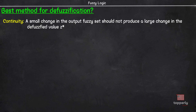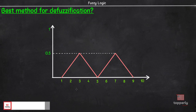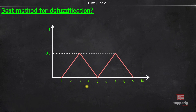The second criterion is known as disambiguity. This criterion says that there shouldn't be any ambiguity in the defuzzified value — that is, a defuzzification method should always result in a unique value for z*. For example, if you consider this output function, we can see that the max membership principle is not applicable here as it will give two defuzzified values, 3 and 7. This is an ambiguity.